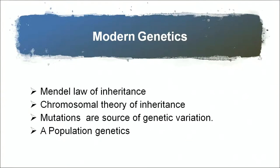None of these theories hold true in the present time. In modern genetics, in the early 20th century, a lot of work was done. First was Mendel's law of inheritance, studied in the previous chapter. Then the chromosomal theory of inheritance given by Sutton and Boveri clearly showed that chromosomes are the carrier of hereditary material. Mutations are the source of genetic variation, creating lots of variability in organisms. Then came population genetics — how nature selects an individual through some pressure in a population.